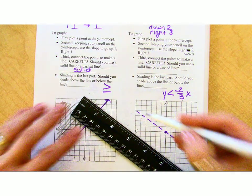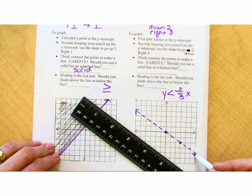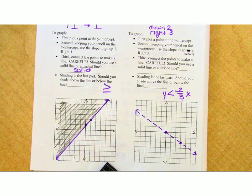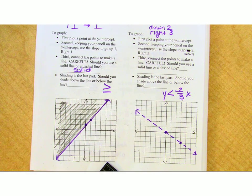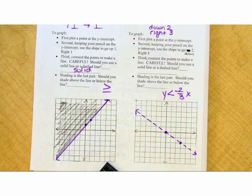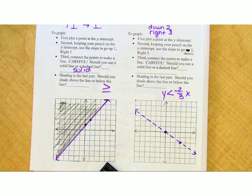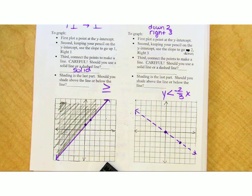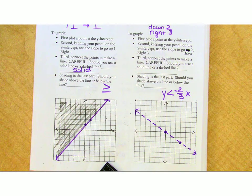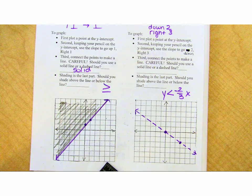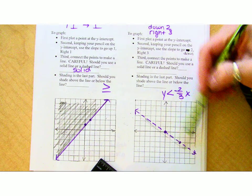I'm going to take it all the way out to the edge of my graph. I have two areas. I have to decide where do I shade. This symbol means it's got to be less than the line. So don't look at it as left and right. Shade what? Above or below. And less than means below.